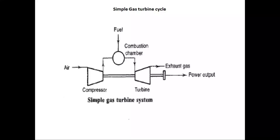In this class we will be discussing about the gas turbine engine, the components of the gas turbine engine, and what are the essential factors that are going to control the efficiency and the specific work output. We will also see the different configurations of the gas turbine engines. In the gas turbine engine, combustion, compression, and expansion are going to take place in a separate way, rather than in reciprocating engines.